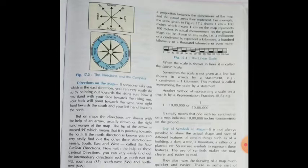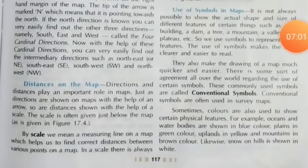With the help of these cardinal directions, you can also easily find out the intermediate directions such as north-east (NE), south-east (SE), south-west (SW), and north-west (NW). Let's proceed to the next topic: distances on the map.